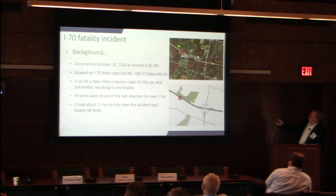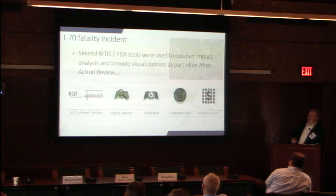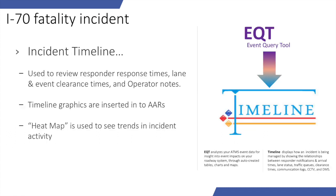It took a total of 11 hours to fully clear the incident and reopen all lanes. While this is a major interstate, there are arterials that allow you to detour around it. What State Highway was able to do was use the different tools within the RITIS platform to figure out what happened. The first thing they did was use something called our Event Query Tool, which lets them search for a day and time and find all incidents that occurred within that date range.